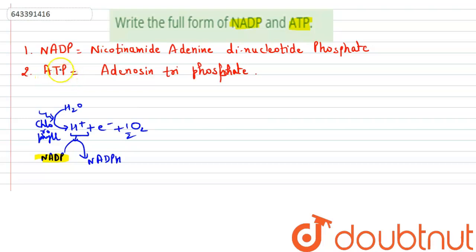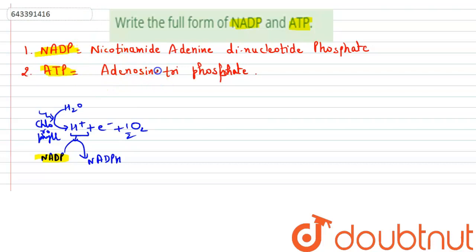So the full form of NADP is Nicotinamide Adenine Dinucleotide Phosphate, and that of ATP is Adenosine Triphosphate. Thank you.